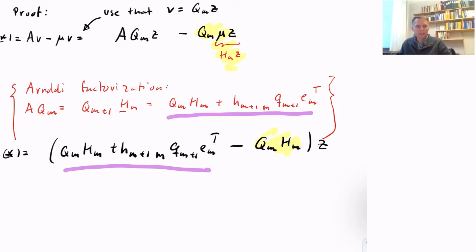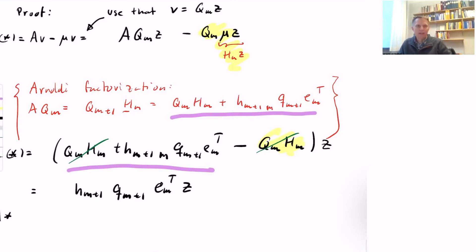Now we see that Q_M H_M cancels on both sides, so we can express this a little bit more compactly.